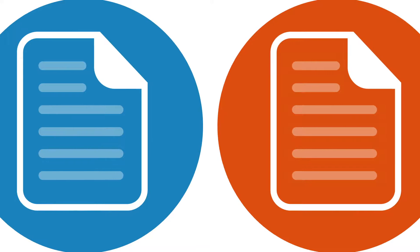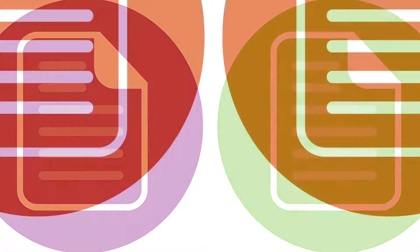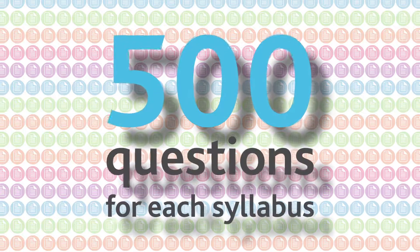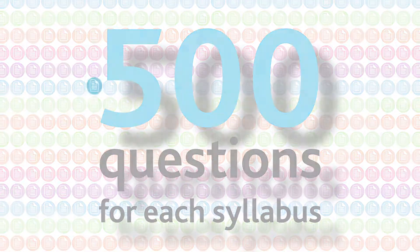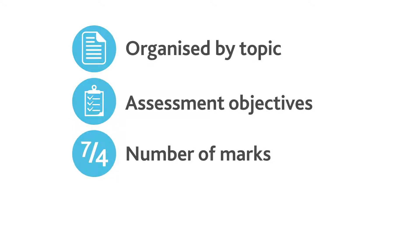To build your test, you can select any questions from past papers. Each syllabus has 500 past paper questions to choose from. Questions are organized by topic and come with information to help you make your selection, including the assessment objectives being tested, the number of marks, and the level of difficulty.